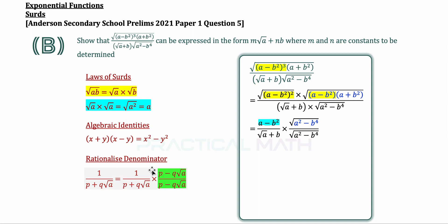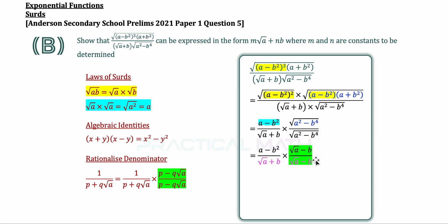Since we must not have any surds in the denominator, we need to rationalize it. To rationalize 1 over p plus q root a, the conjugate is p minus q root a, because using the identity (p + q√a)(p − q√a) = p² − q²a eliminates the surd. So we multiply root a plus b by the conjugate root a minus b on the top and bottom. Root a times root a gives a, and minus b times b gives negative b squared, resulting in a minus b squared. The (a minus b squared) terms on top and bottom cancel, leaving us with only root a minus b as the final answer for part B.